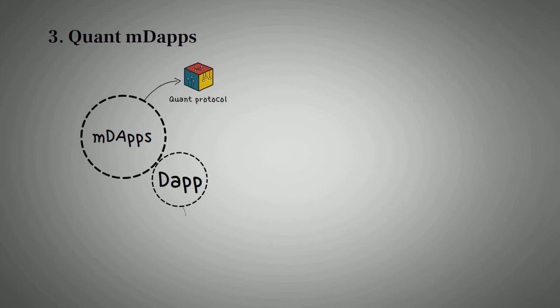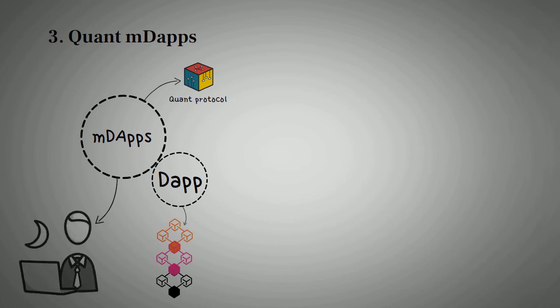The third feature is Quant mDapps. mDapps are another unique feature found on the Quant protocol. Decentralized applications, also known as dApps, are blockchain-based, and mDapps allow different apps to work on as many blockchains as possible. Within dApps, developers enjoy the advantage of each blockchain without having to necessarily deal with its restrictions. For instance, a developer can enjoy the consensus from one chain and acquire data from another.